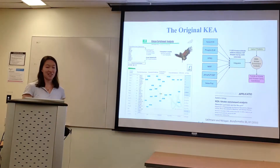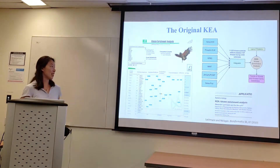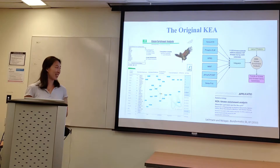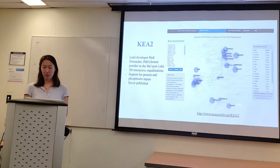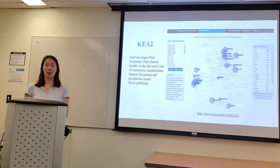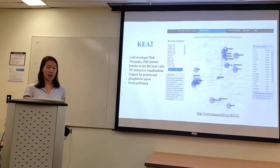The original KIA was first published by the Mayan Lab in 2009 in Bioinformatics. It contains kinase-substrate interaction libraries from six databases and has been cited 117 times. The next version, KIA-2, was developed by Nick Fernandez, who was a postdoc at the Mayan Lab and now works at Immunocore. KIA-2 includes 3D visualizations and accepts both phosphosite and protein inputs, but it was never published.